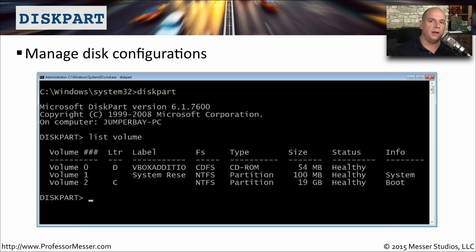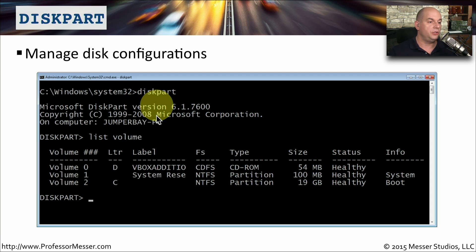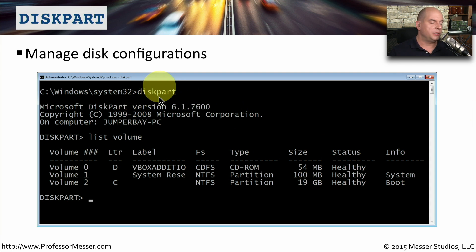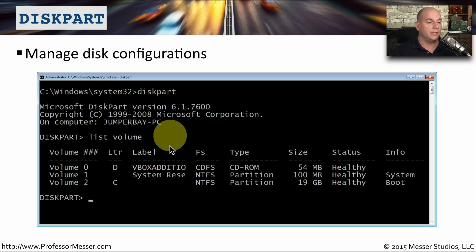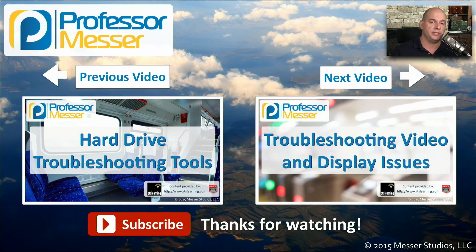If you want to resolve any problems with Windows partitions, you can use the diskpart command to manage disk partitions. You generally want to run this from the Windows command prompt. When you run diskpart, you'll be taken to a separate set of prompts, and from there you can run different commands to list the volumes, remove, add, or make any changes to these partitions.